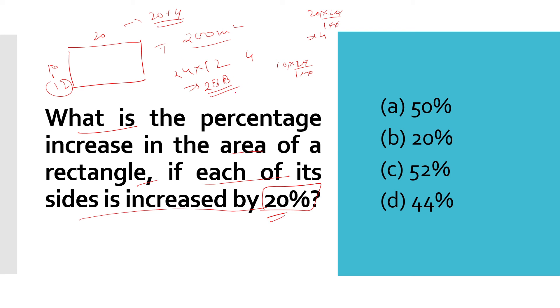Now we have to find out the increase. 288 minus 200 is 88. So the percentage will be 88 upon 200 into 100, which comes to 44. The right answer is 44%.